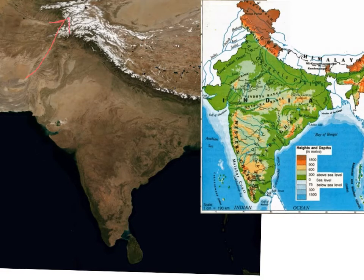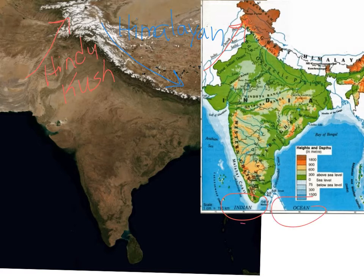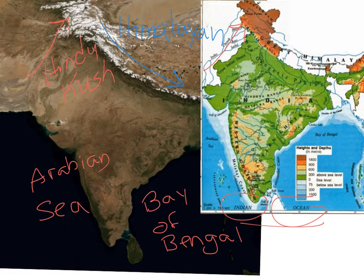Here you will find the Hindu Kush mountain range as well. The Bay of Bengal, the Indian Ocean, and the Arabian Sea limit contact with lands to the east and west. These mountains and waters have been a major influence on the history and culture of the land.